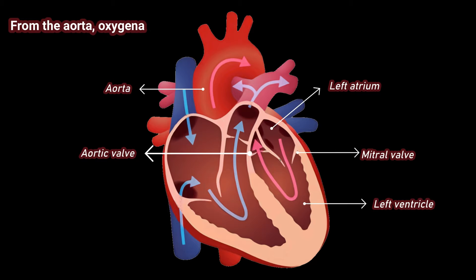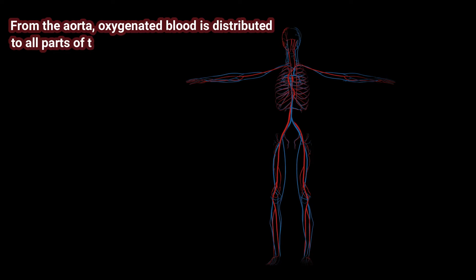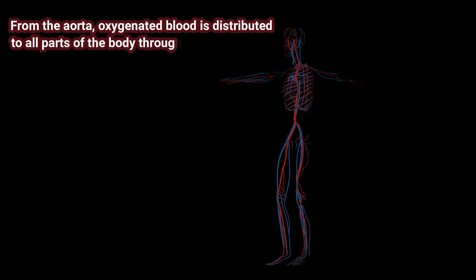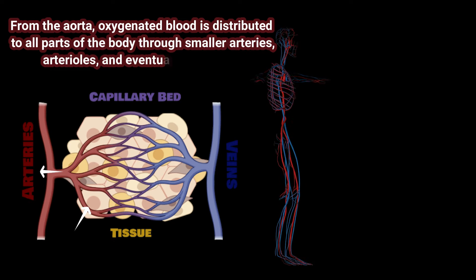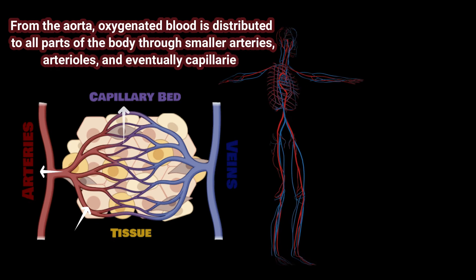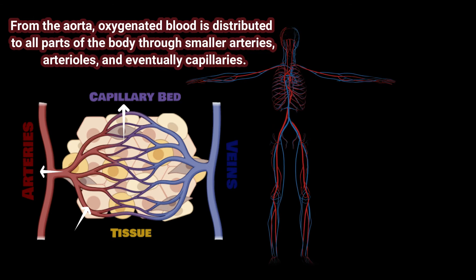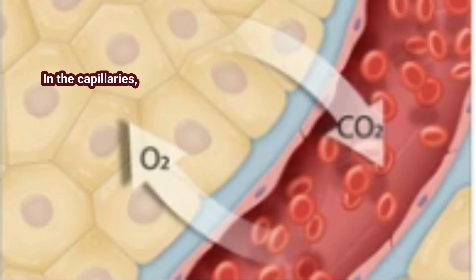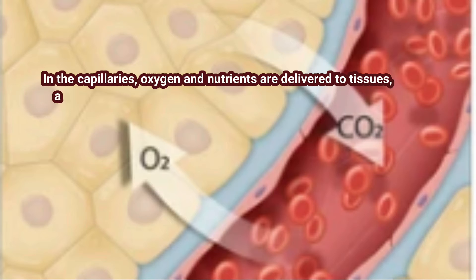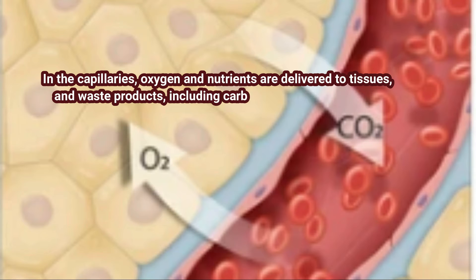From the aorta, oxygenated blood is distributed to all body parts through smaller arteries, arterioles, and eventually capillaries. In the capillaries, oxygen and nutrients are delivered to tissues, and waste products, including carbon dioxide, are removed.